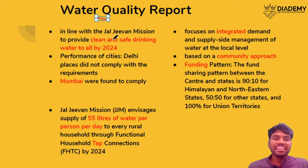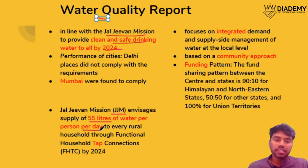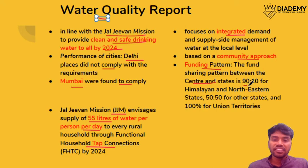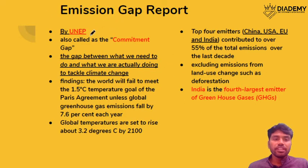The Water Quality Report is in line with the Jal Jeevan Mission, which aims to provide clean and safe drinking water by 2024. The mission targets 55 liters per person per day through tap connections. According to this report, Delhi is not complying with water quality norms while Mumbai is. The Jal Jeevan Mission focuses on integrated demand and supply, uses a community approach, and has a funding pattern of 90:10 for Himalayan/North-East states, 50:50 for other states, and 100% for Union Territories.